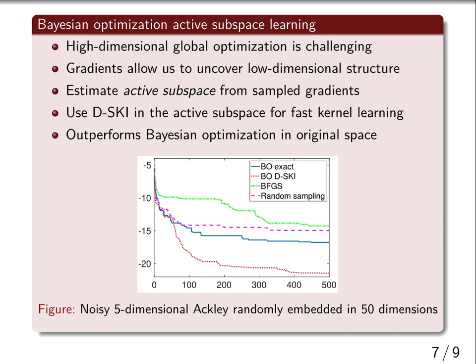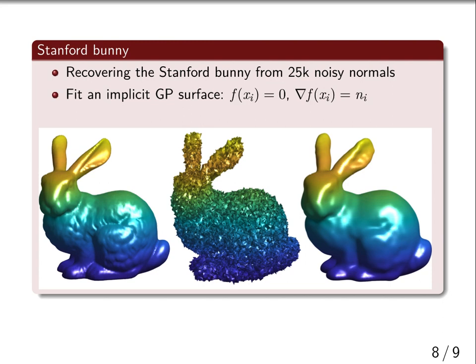In another application, we consider implicit surface reconstruction of the Stanford Bunny, which is a triangulation with 25,000 points and normals. The original dataset is shown on the left, and the same dataset with heavily noisy normals is shown in the middle. On the right is our implicit GP fitted to the noisy data, and we are able to recover an implicit surface that looks similar to the ground truth.